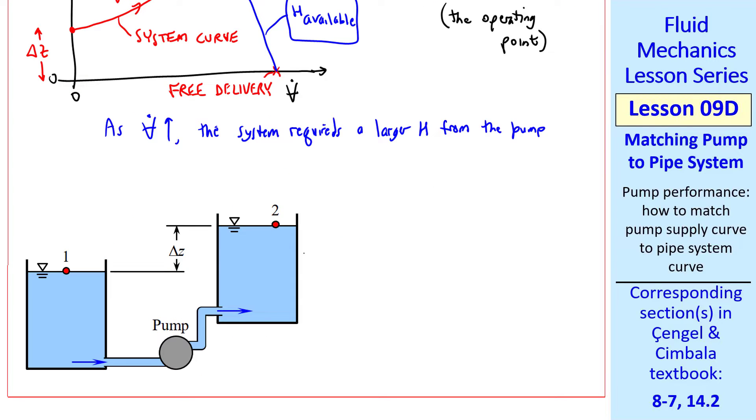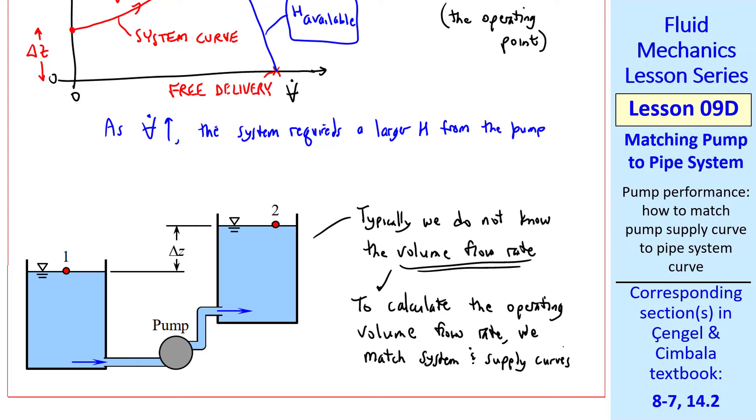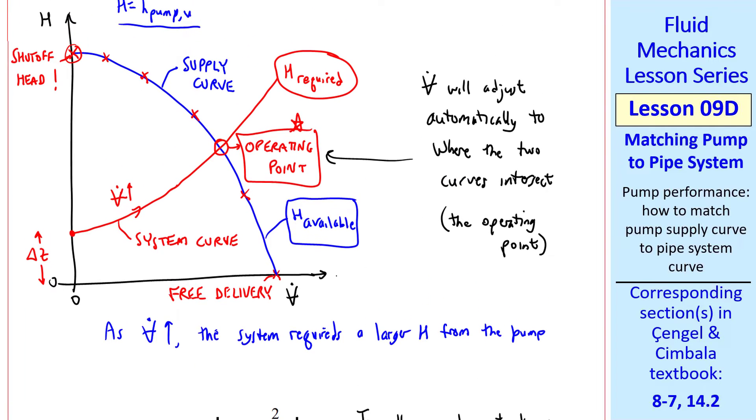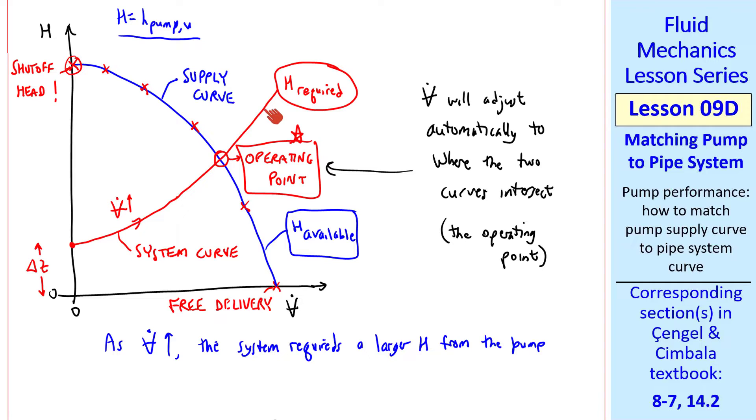In a flow system like this, typically we do not know the volume flow rate. This is our unknown. To calculate the operating volume flow rate, we match system and supply curves, like I illustrated here. Again, these curves meet at only one point and that will be our operating point at a certain V dot and at a certain head. I label this point the operating head and this point the operating volume flow rate at the operating point.